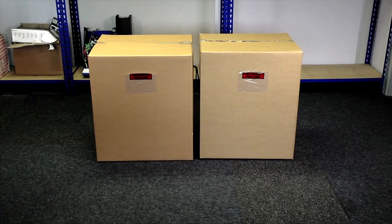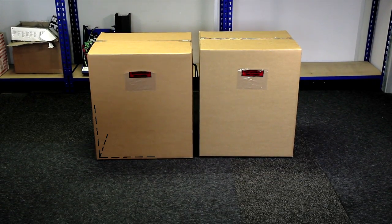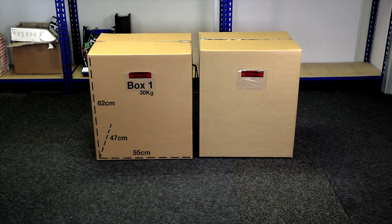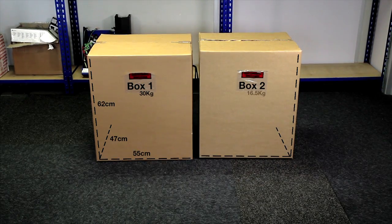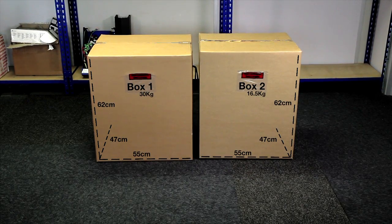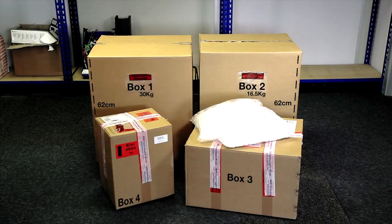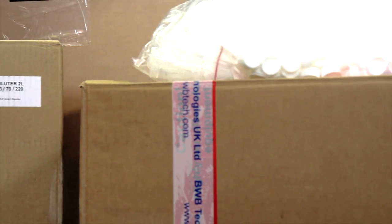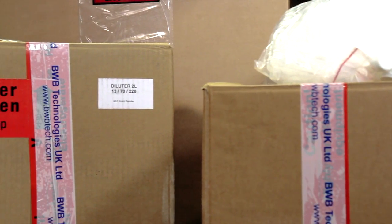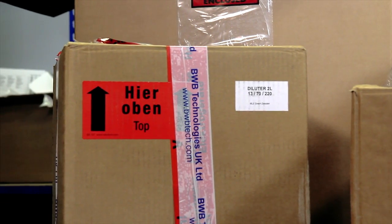When your instrument arrives you will receive four boxes in total. Box one contains the flame photometer, box two contains 250 screw top 5mm vials. Box three contains the auto sampler and its peripherals, box four contains the auto diluter and the reservoir diluter bottle with suction assembly.